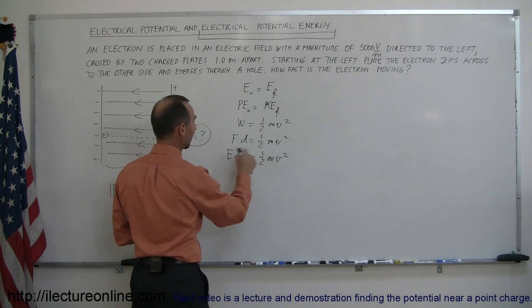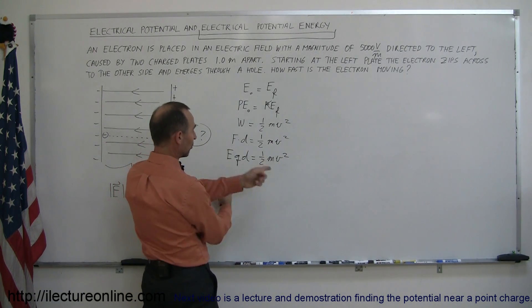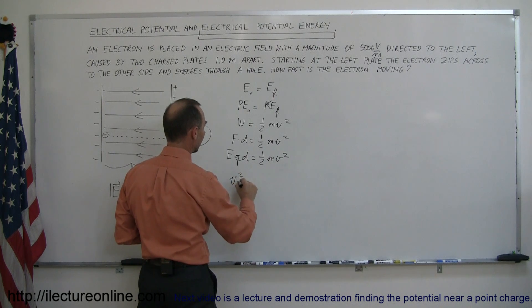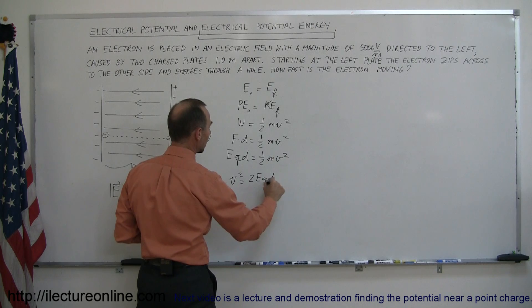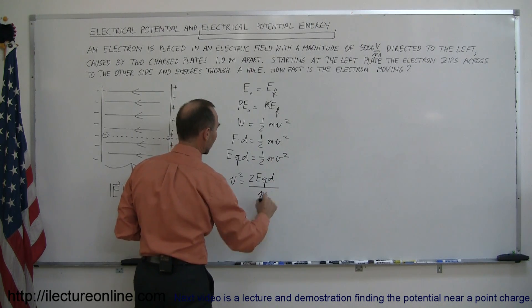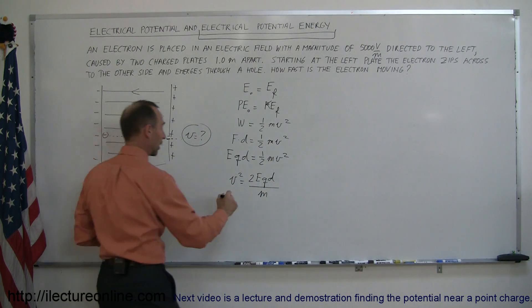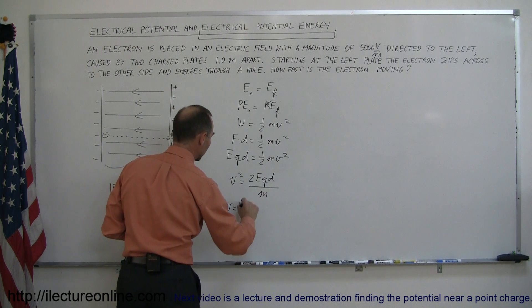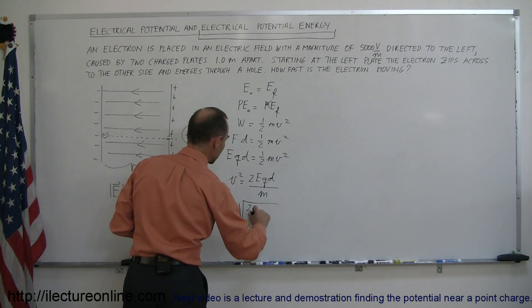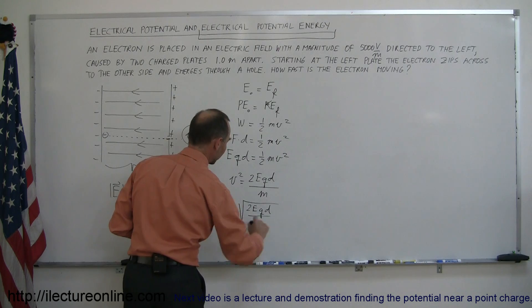So multiply both sides by 2, divide both sides by m and move the equation around. So we can say v squared is equal to 2Eqd divided by the mass of the electron and then we take the square root of both sides so the velocity is equal to the square root of 2Eqd divided by the mass.